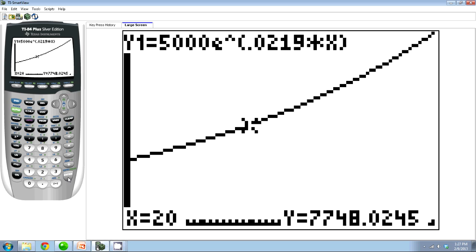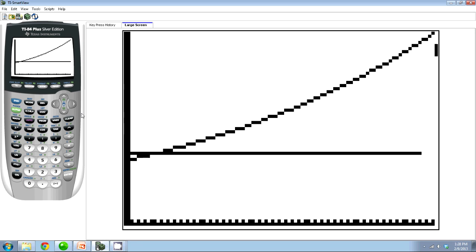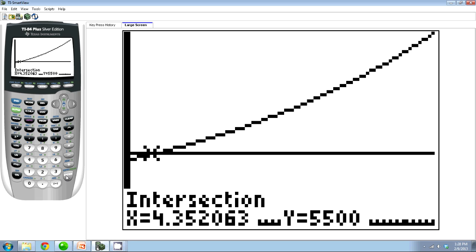The next one I said is, how long until the investment's worth 5,500? Well, that's a value of Y. So I have to go to Y equals and say, let's graph 5,500. Go back to graph. And you see they cross pretty quick, but remember, our scale is 50 years. These are two lines that are intersecting. So remember, I can go to second and calc, intersect, press enter through everything. And we get 4.35 for X, the number of years.